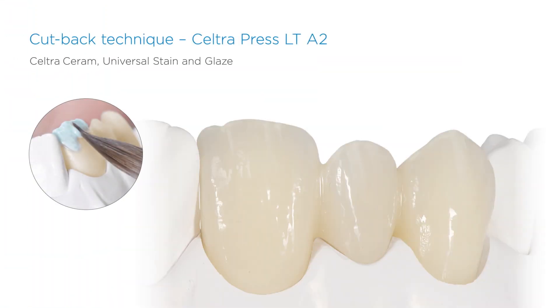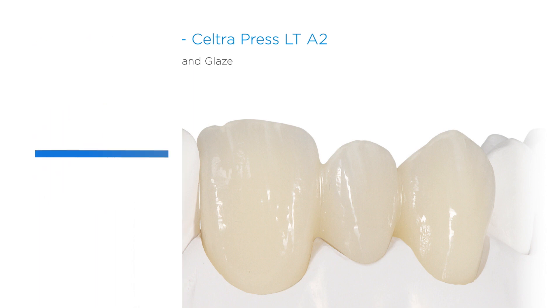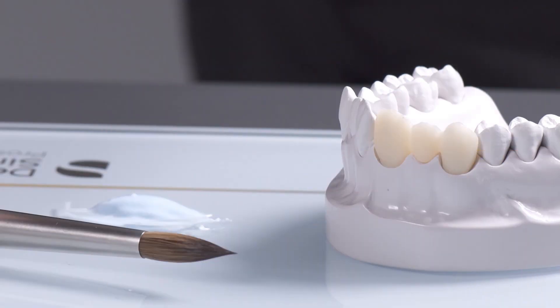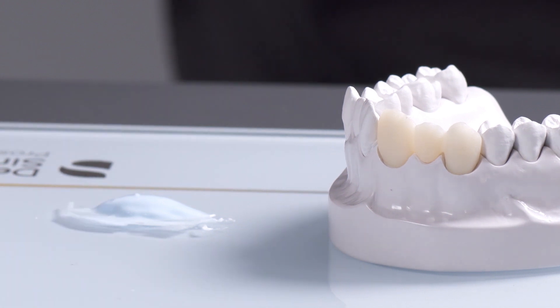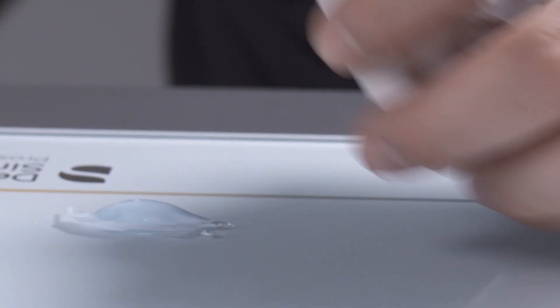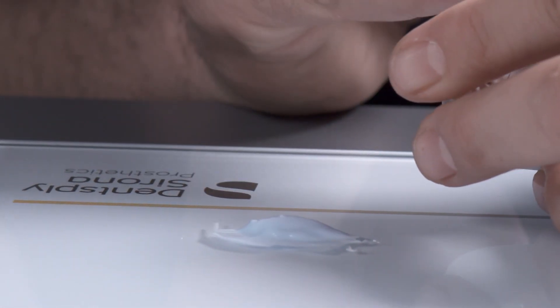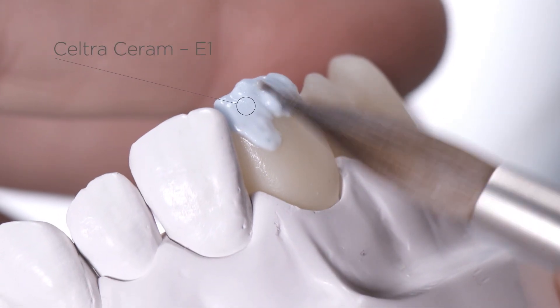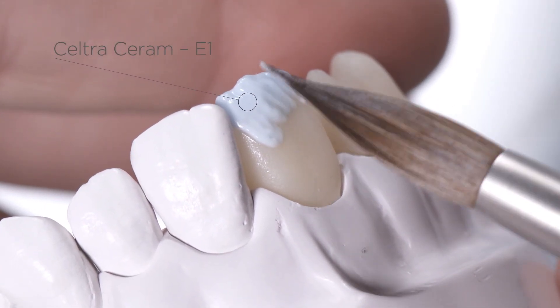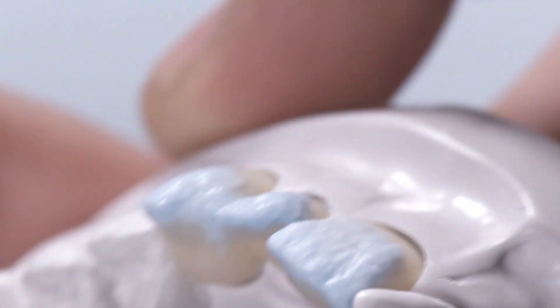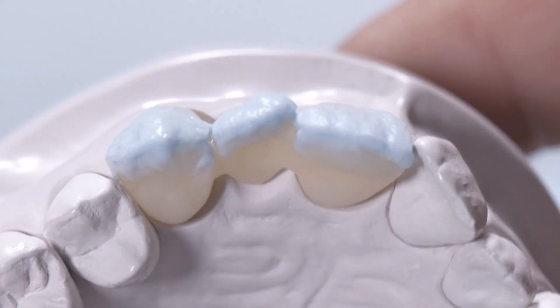Seltra Press already provides a high level of aesthetics in monolithic mode. Using the cutback technique with just a single incisal material, this aesthetic result can be further enhanced. For this, we use Seltra Ceram Enamel E1. The Mamelon structures were created when designing the framework. Build up the labial and palatal aspects of the enamel layer with Enamel E1 and shape them to obtain their final contours.